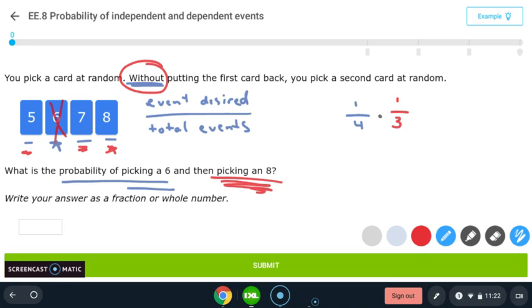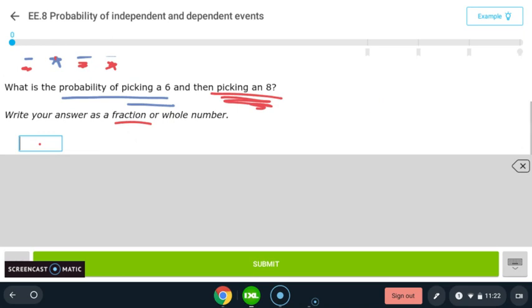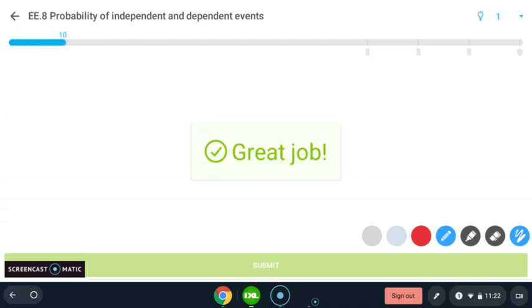And then finally, we can go ahead and multiply those when you're multiplying fractions, multiply straight across one times one is one. And four times three is 12. And so our probability, since they want it written as a fraction or a whole number, is one out of 12. We can submit that. And there we go.